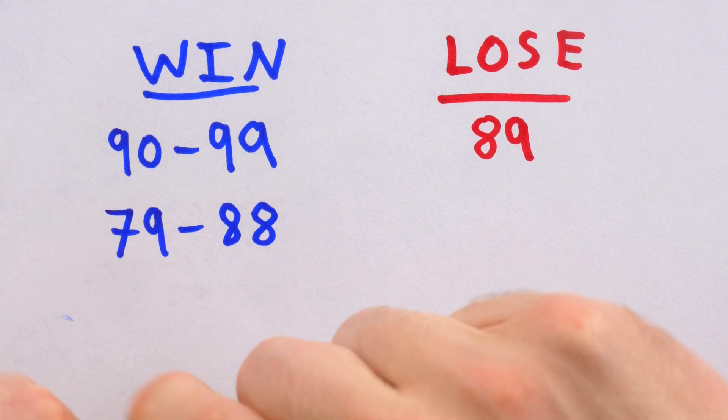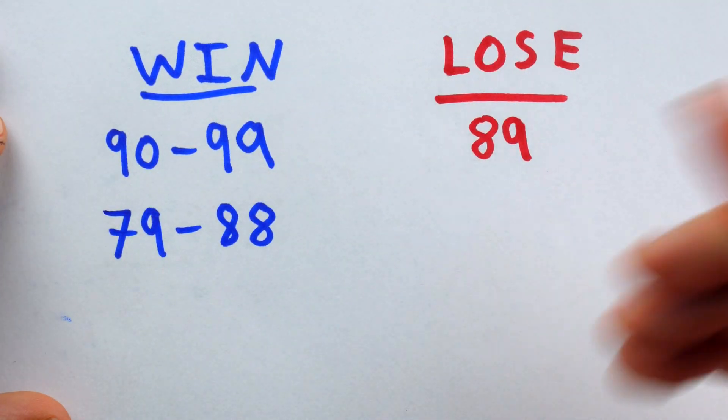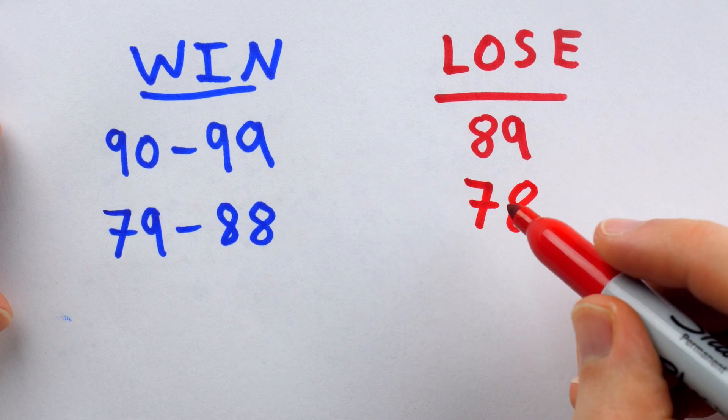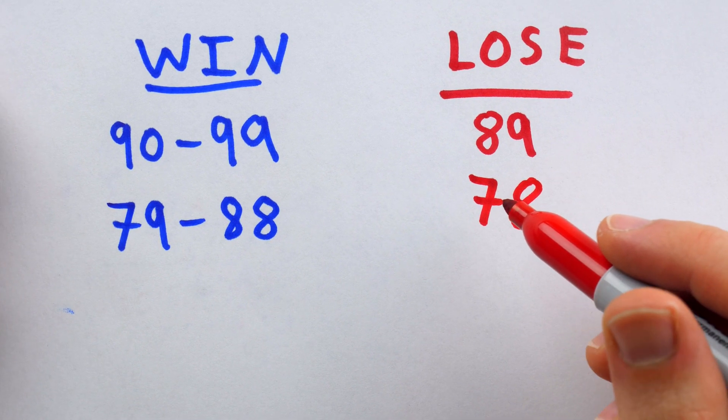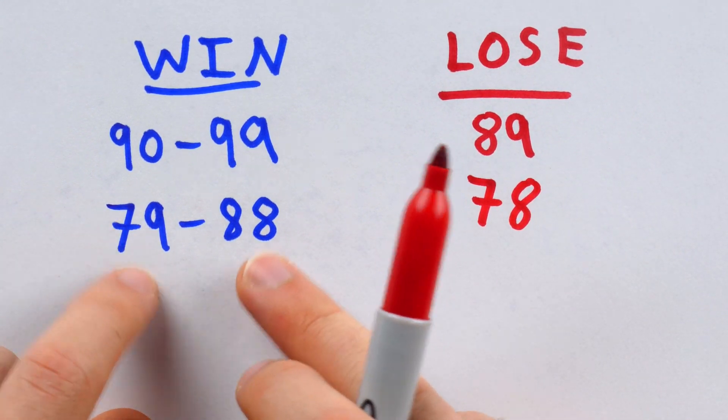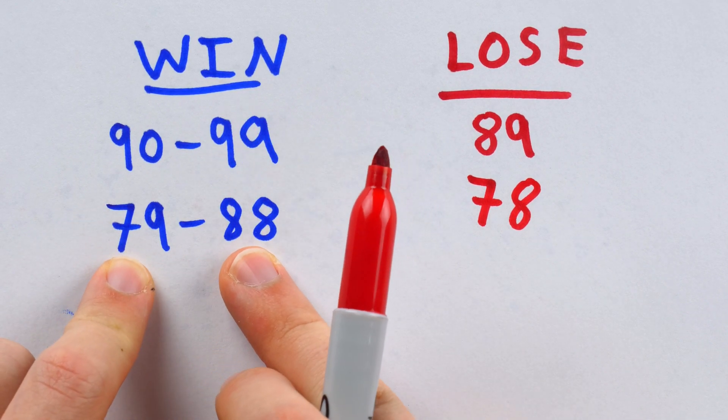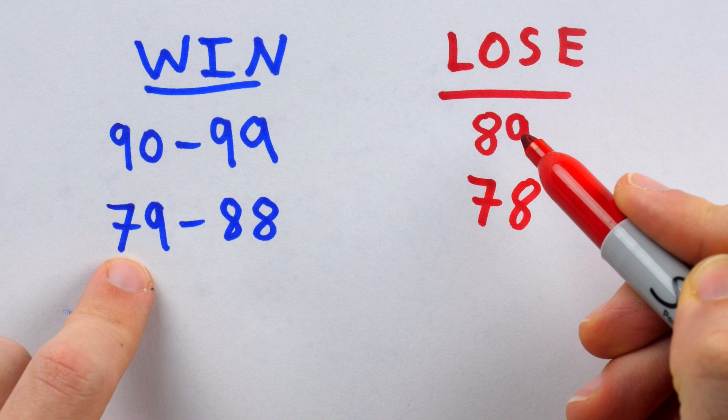This then, of course, means that we have an additional losing position, which is 78, because if it's your turn and the subtotal is 78, guaranteed you're going to put the next player into one of these winning positions, something between 79 and 88, then they can force your loss.